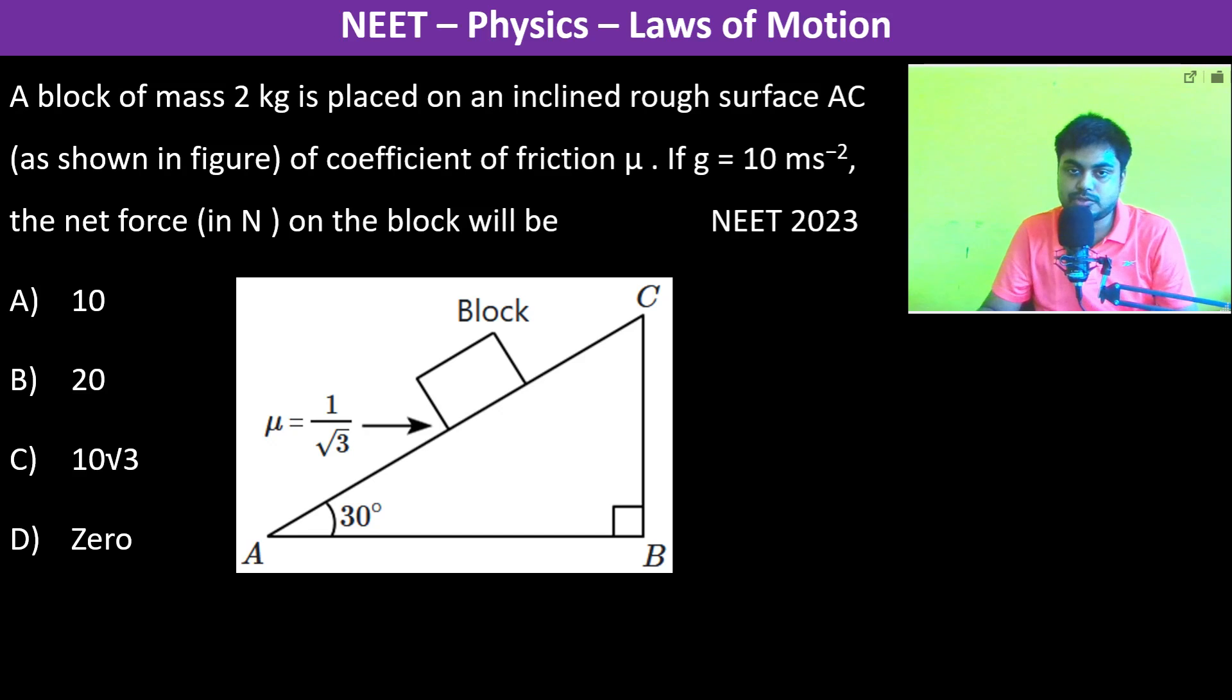A block of mass 2 kg is placed on an inclined rough surface AC of coefficient of friction mu. The mu is given as 1 by root 3. If g equals 10 meter per second square, the net force on the block will be...